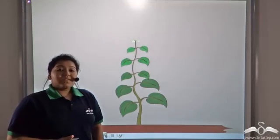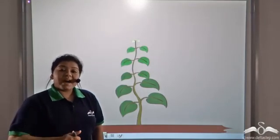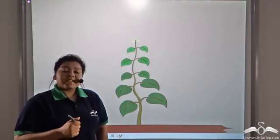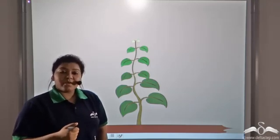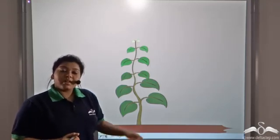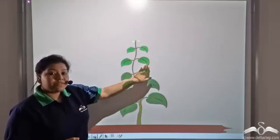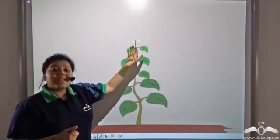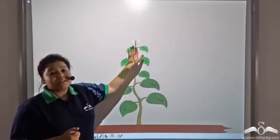The phloem operates bi-directionally, that is in two directions. It can transport food downwards from the leaf to the roots, and also upwards. So let us see how that is happening.